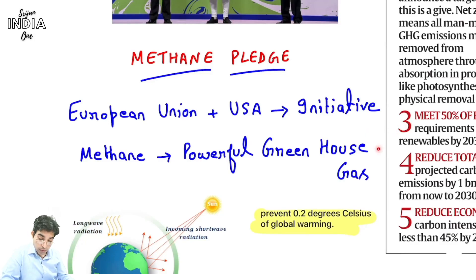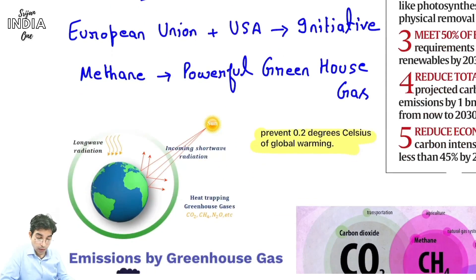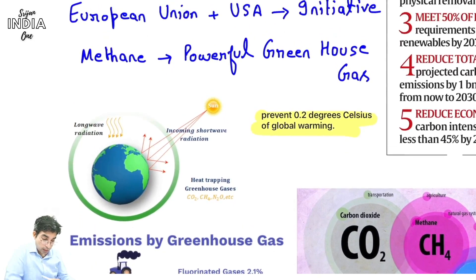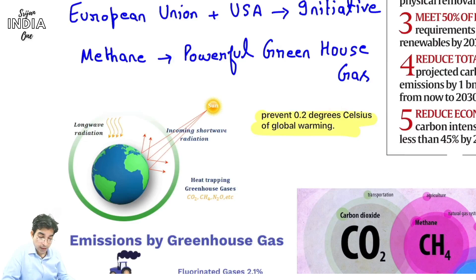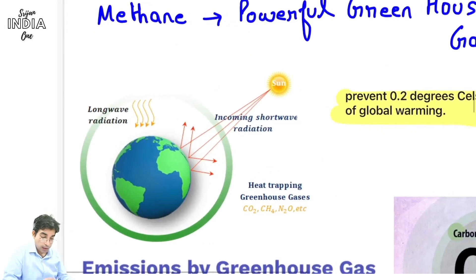Methane jo hoti hai yeh bhi greenhouse gas hoti hai aur yeh zyada powerful greenhouse gas hai in comparison to CO2. But hum CO2 pe zyada kyun emphasize karte hain? Because CO2 mein quantity hai - methane itni quantity mein produced nahi hoti. But kam quantity mein bhi yeh zyada lethal hai in respect of greenhouse gas impact. Hamari koshish yeh hogi ki methane ko agar hum kam karein toh 0.2 degree centigrade tak global warming ke 0.5 degree target mein help mil sakta hai.